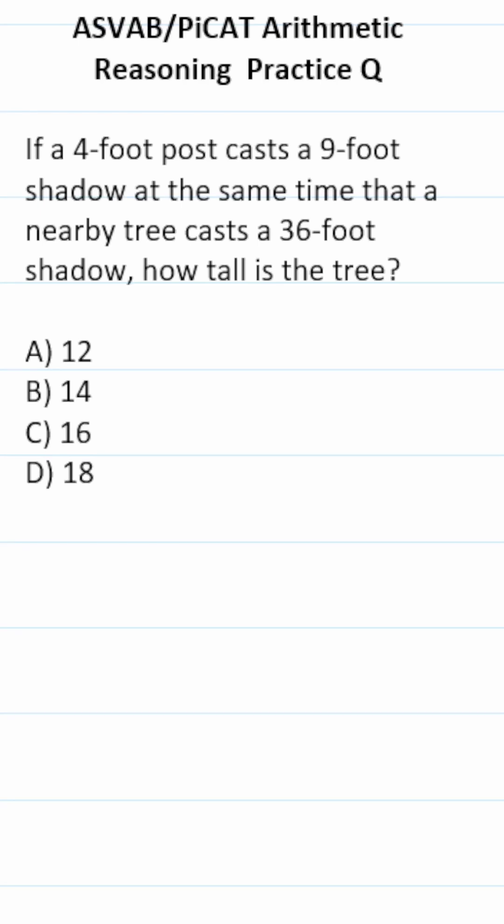ASVAB PICAT Arithmetic Reasoning Practice test question says if a 4-foot post casts a 9-foot shadow at the same time that a nearby tree casts a 36-foot shadow, how tall is the tree?